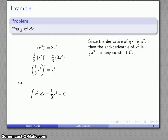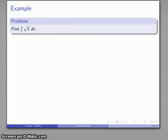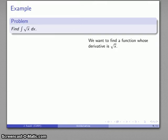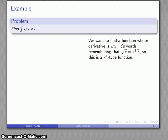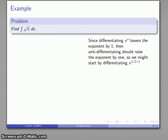In the first part of calculus, the difficulty was in the algebra. You'll find that in finding antiderivatives, the difficulty is more often in the arithmetic. Let's look at the antiderivative of √x. Whatever function we find, when we differentiate it with respect to x, we should get √x. It's worth remembering that √x is x^(1/2), so this is another function of the form xⁿ. Anti-differentiating should cause the exponent to increase by 1.